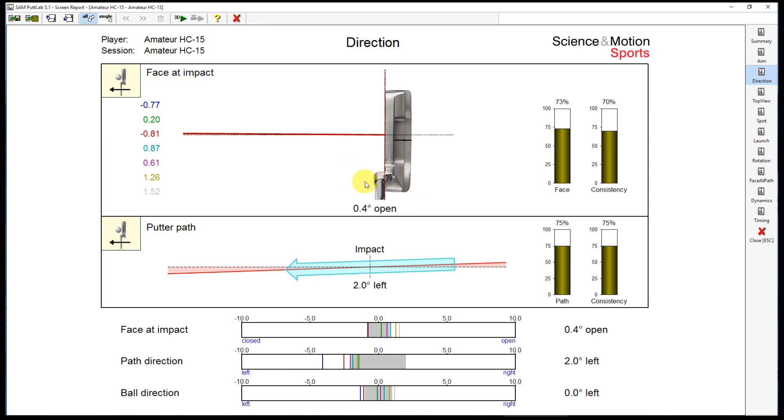The puttlab report shows the average phase angle at impact for this player. It is 0.4 degrees open to the right. So this player has the tendency of starting the ball slightly right. But if you look at the single putts, then you see some of the putts start to the left.